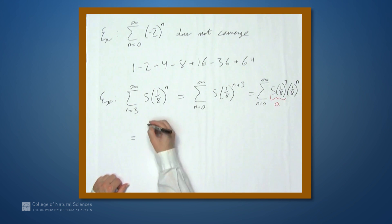So we get 5 times 1 over 8 cubed, this is a, all over 1 minus r, which we knew right from the beginning, is going to be 1 over 8.